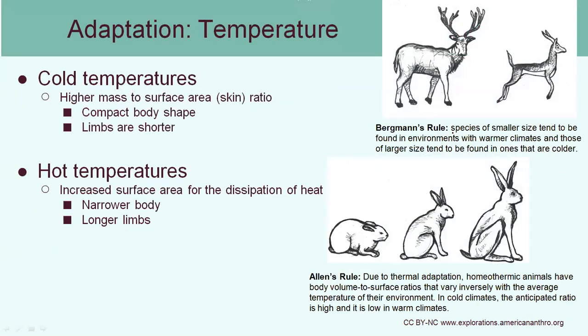Now let's look at adaptations to temperature — these are long-term genetic changes. In cold temperatures, you're more likely to have a higher mass-to-surface-area ratio, because smaller animals lose heat faster while larger animals are less likely to lose heat. This follows Bergmann's rule, which says that species of smaller size tend to be found in warmer climates and species of larger size tend to be in colder climates. Here are two species of deer: the reindeer live in colder environments and are larger. You also see this with bears — brown bears are relatively small compared to their polar bear relatives, which live in the Arctic.